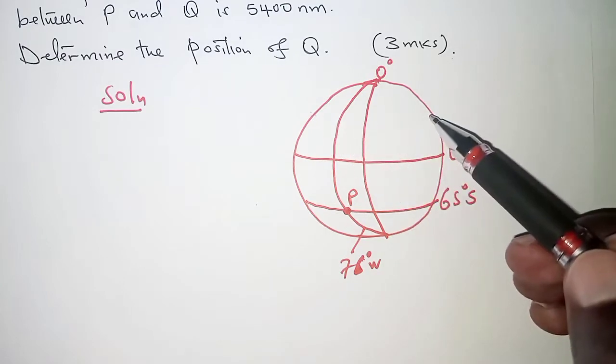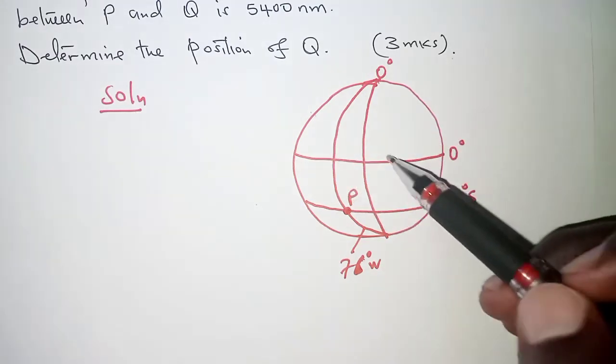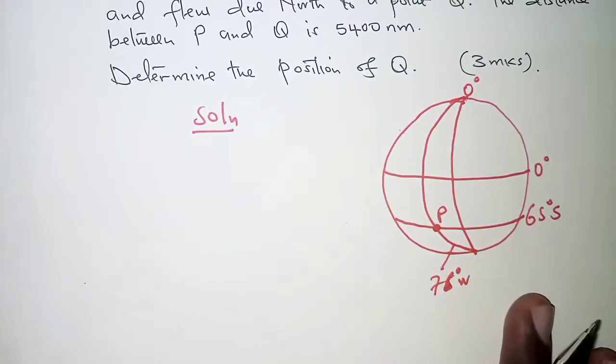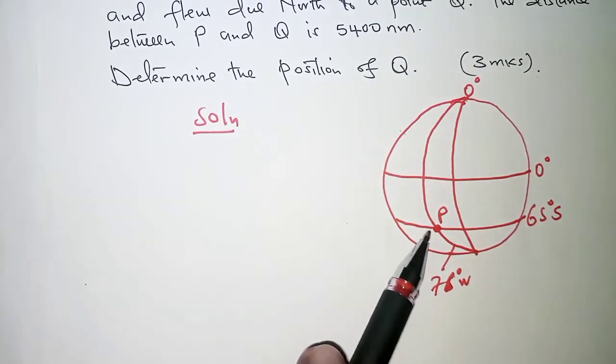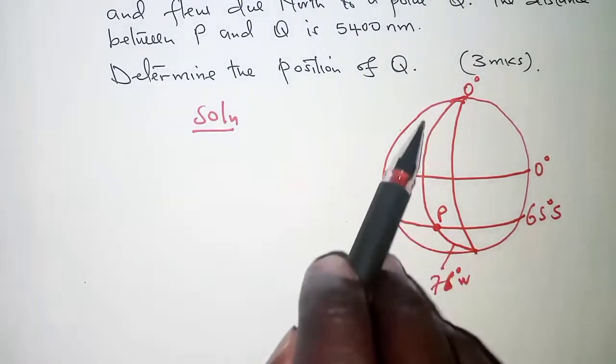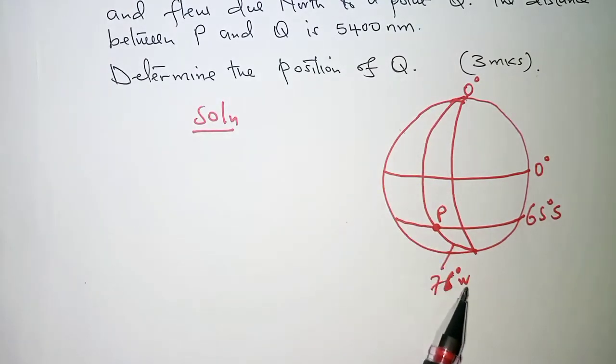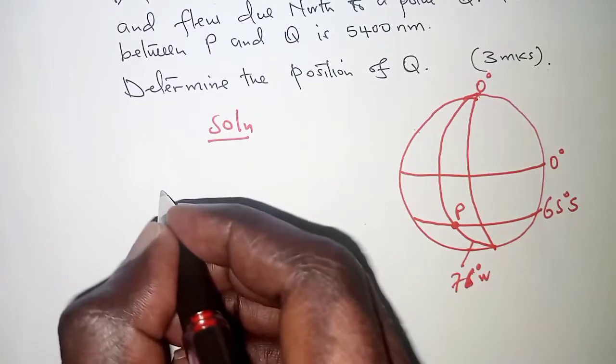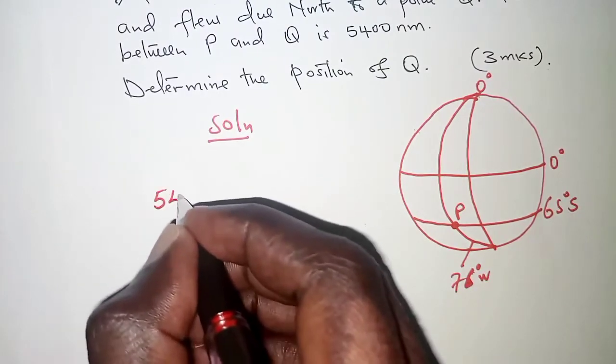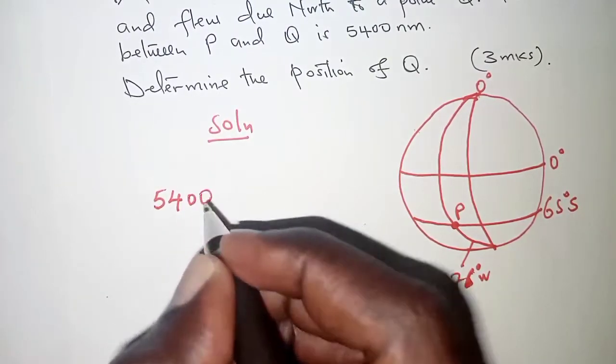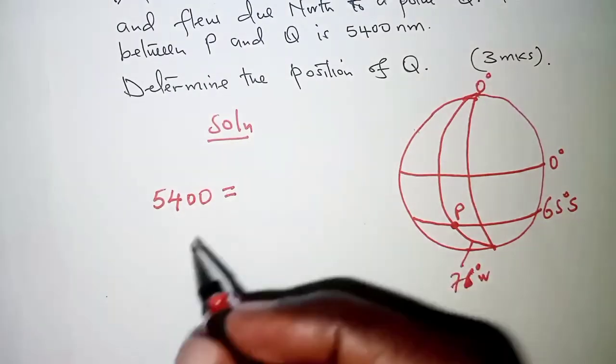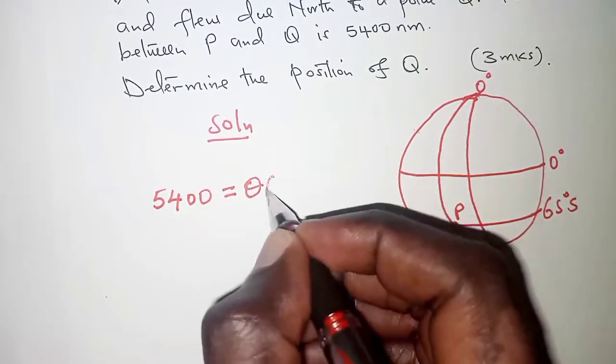What we are going to do, because we have identified that it was flying along the longitude 76 degrees west, we can therefore say that the distance which is already given as 5400 nautical miles can be obtained by having theta times 60.